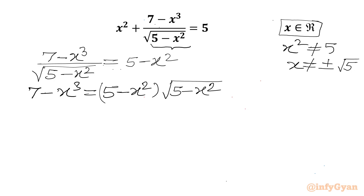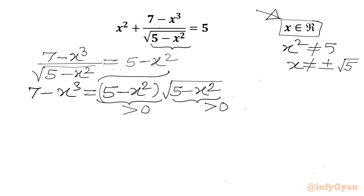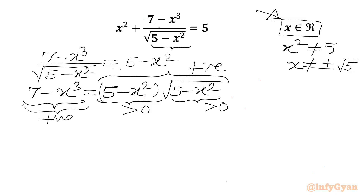Now for real x, the radicand must be positive, so the square root will be positive. Since 5 − x² is positive, our RHS will always be positive. So our LHS must also be positive, and I can conclude x³ should be less than 7.